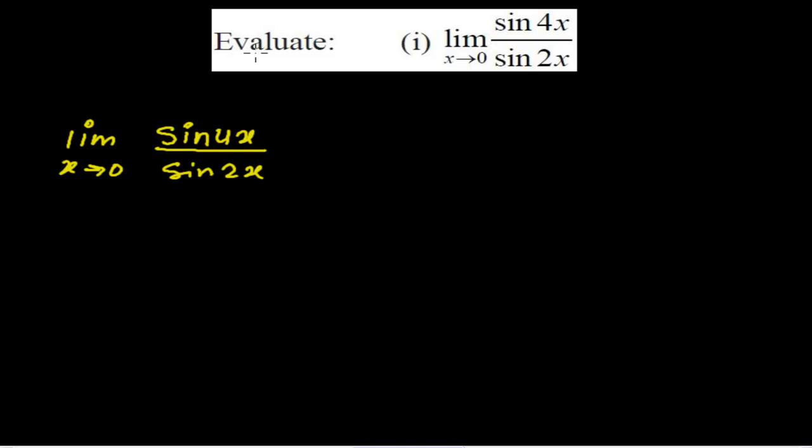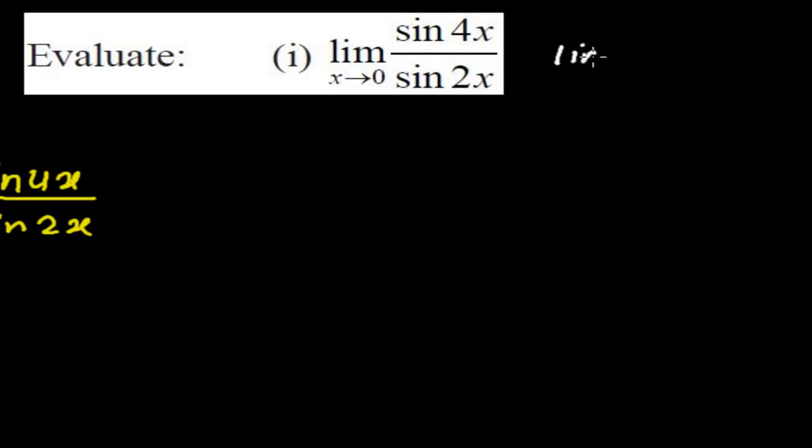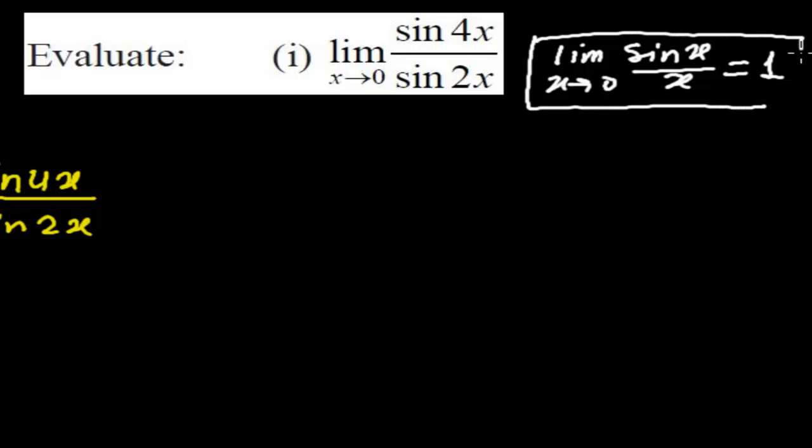Limit when x tends to 0, the ratio of sin 4x to sin 2x. Now how to find the limit of this? We have learned a formula recently in previous videos that limit when x tends to 0, sin x divided by x equals 1.